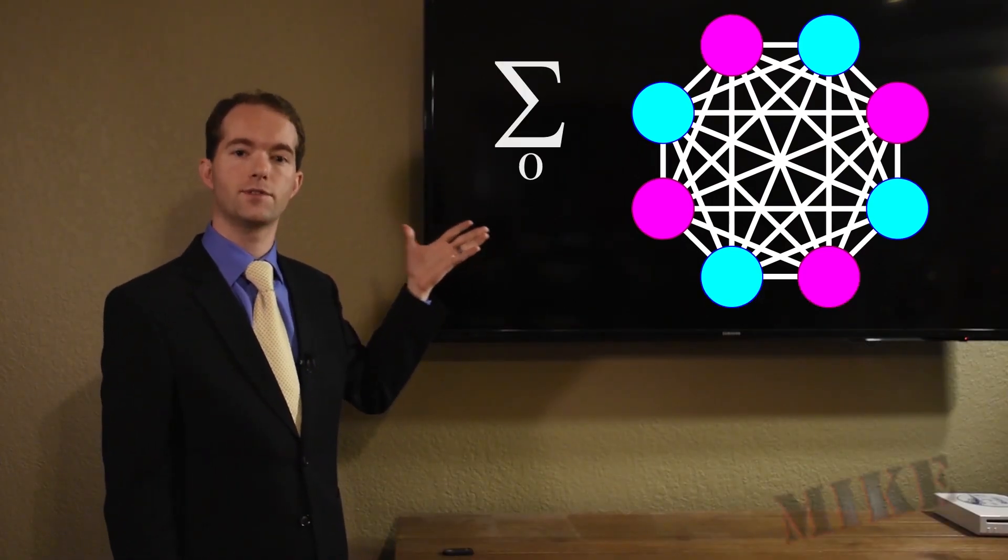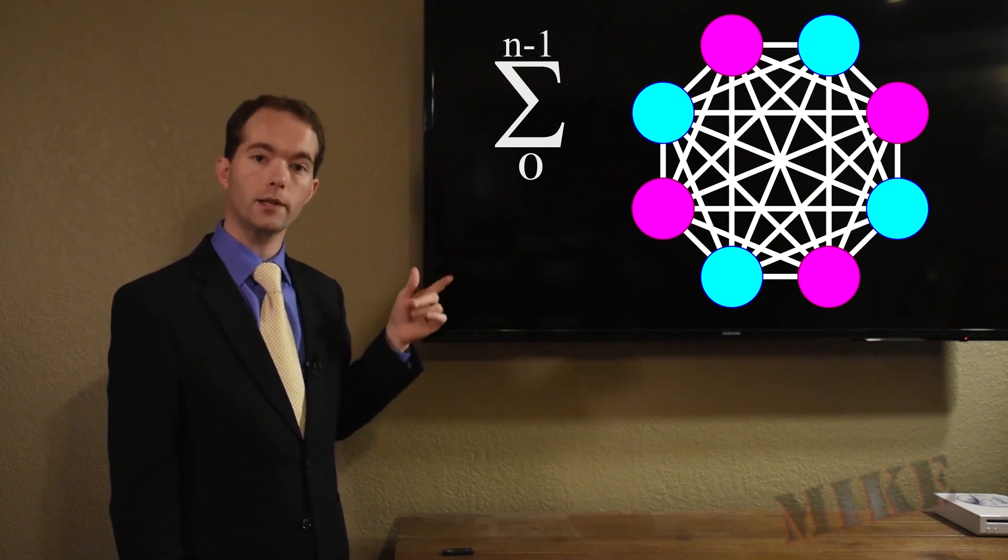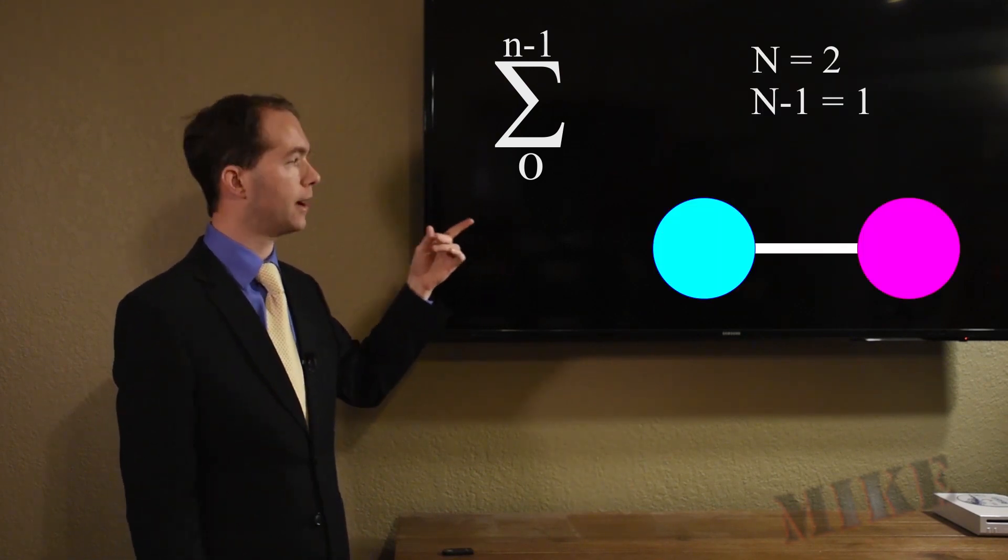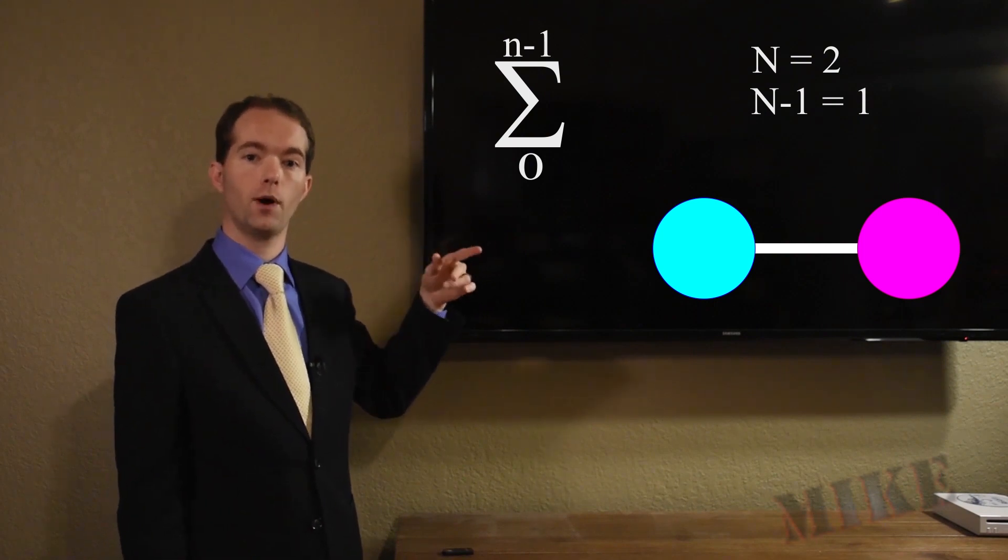It's the sum of 0 to n minus 1. That's it. And you can quickly see that it works. With only two people, n equals 2, and n minus 1 is 1, and the sum from 0 to 1 is 1.